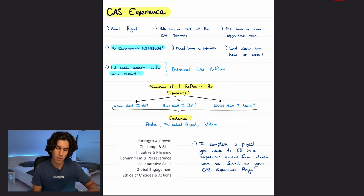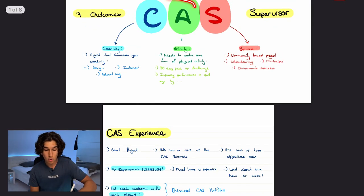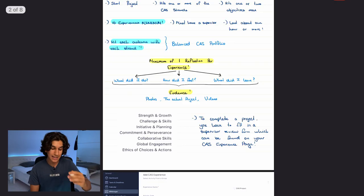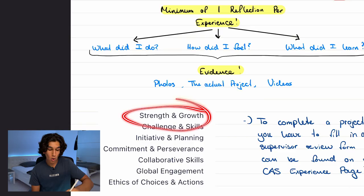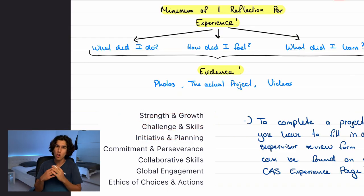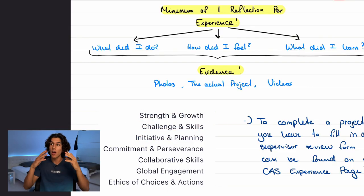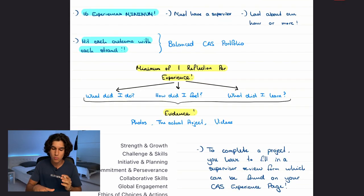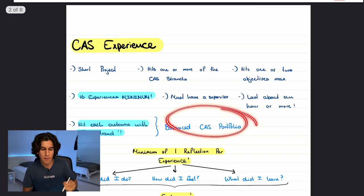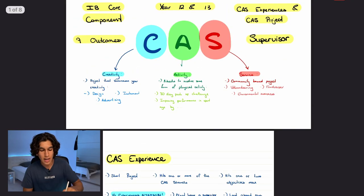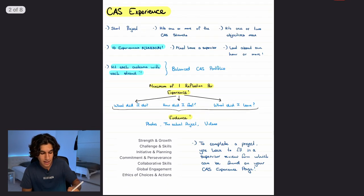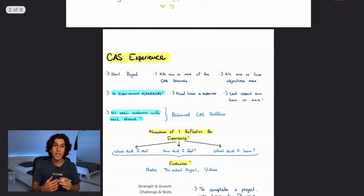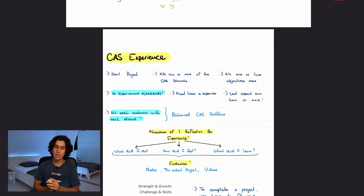You can have a creative and active experience at the same time, and it can hit one or two objectives simultaneously — so that marks off multiple requirements at once. Each of the strands needs to be hit at least once with each of the objectives. So that's what a balanced portfolio means.